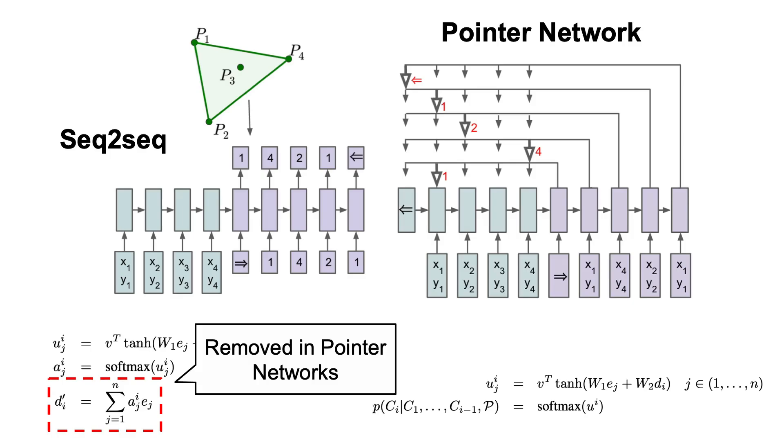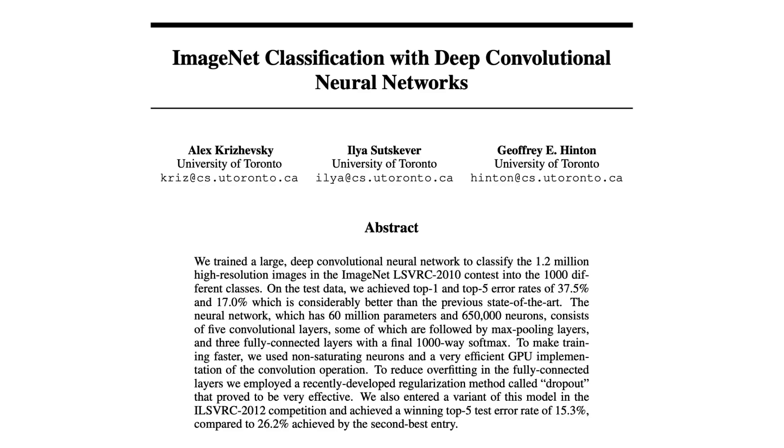You can see this in the equation which describes the pointer network where the softmax operation over u is not further used to calculate the context vector and the output points directly to the input token having the maximum value. I have to admit that this is a pretty interesting variation of the attention mechanism, and I highly recommend reading the entire paper if you want to better understand pointer networks.